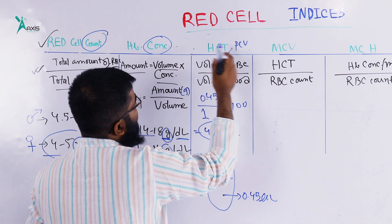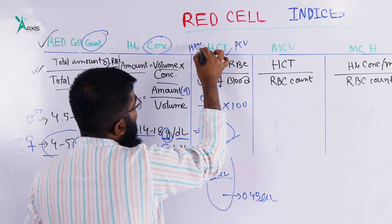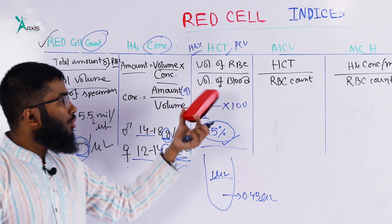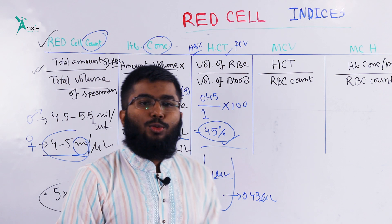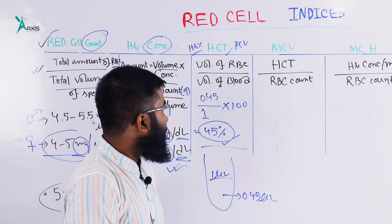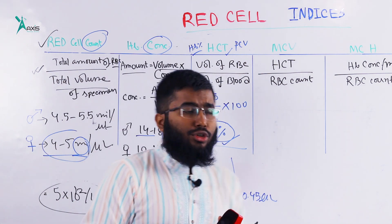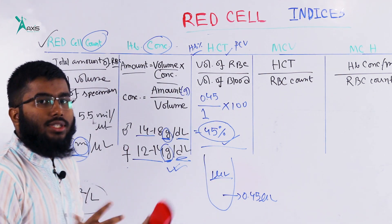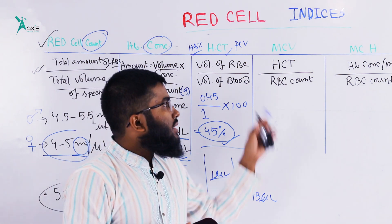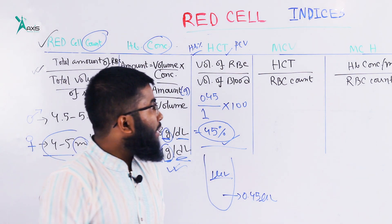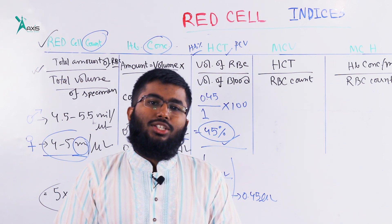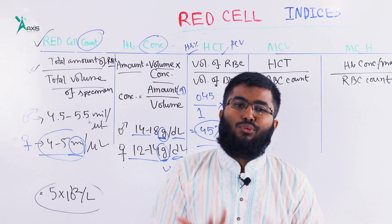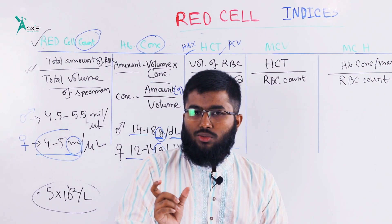If you look at the hematocrit and the hemoglobin together, you can derive further indices. We have MCV, MCH, and MCHC. MCV stands for Mean Corpuscular Volume — 'mean' means average, and 'corpuscular' refers to the cell.